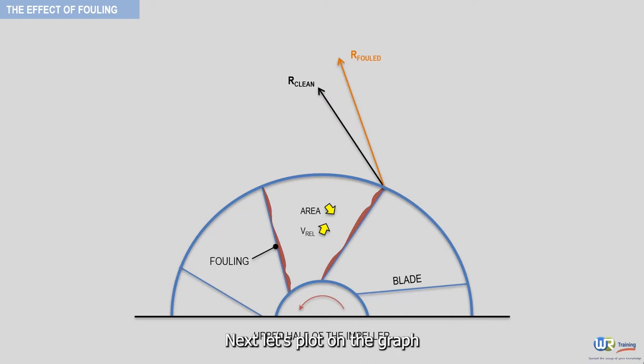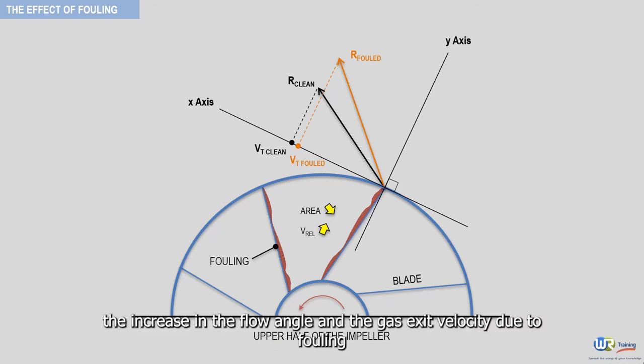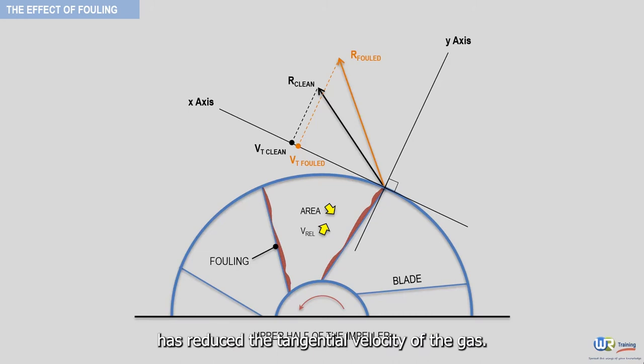Next, let's plot on the graph the x component or tangential velocity for these two vectors. As seen here, the increase in the flow angle and the gas exit velocity due to fouling has reduced the tangential velocity of the gas. The tangential velocity in fouled conditions is lower than that in clean conditions.